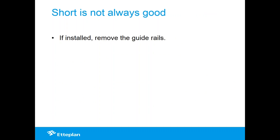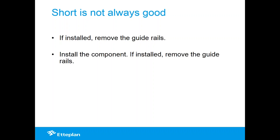Another example of ambiguity: 'If installed, remove the guide rails.' On its own this seems to say install the guide rails first, then remove them. But add the sentence 'Install the component' before it, and now 'if installed' could refer to either the component or the guide rails — creating ambiguity. The correct way is: 'If the guide rails are installed, remove them' — state the subject first, then refer back to it. Also consider: 'A woman hits a man using a hammer' — who is holding the hammer? It could be either person.